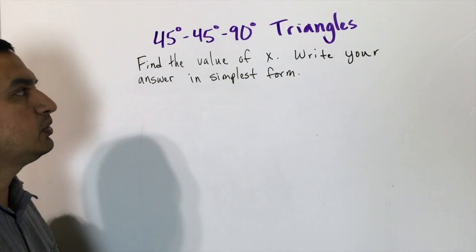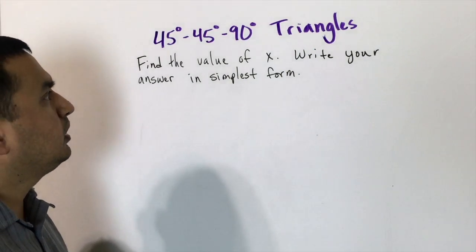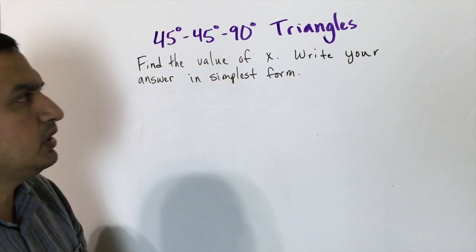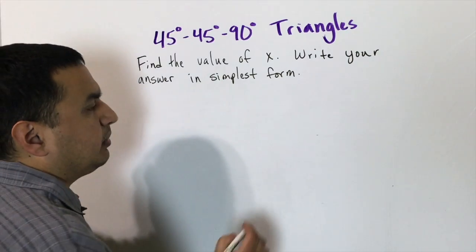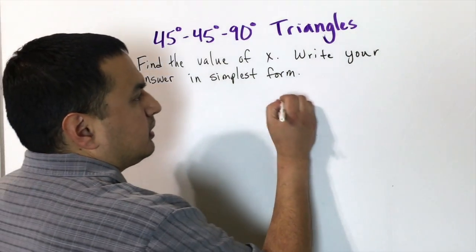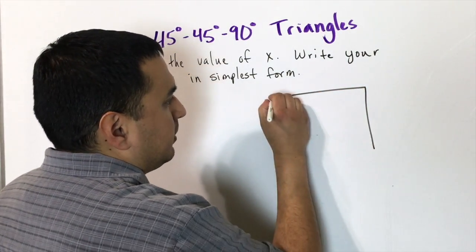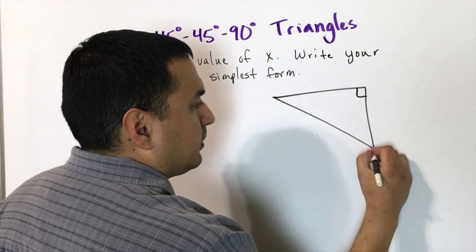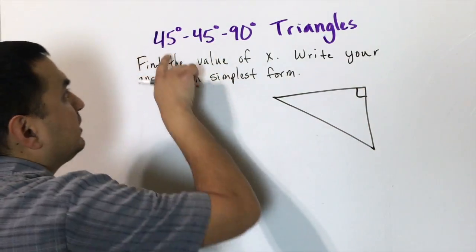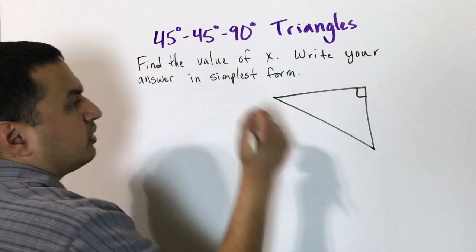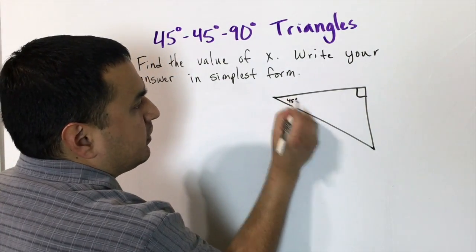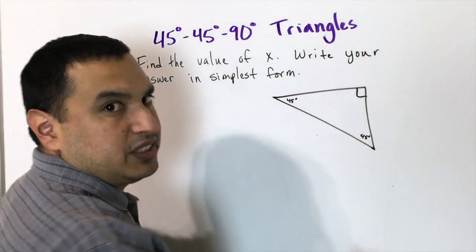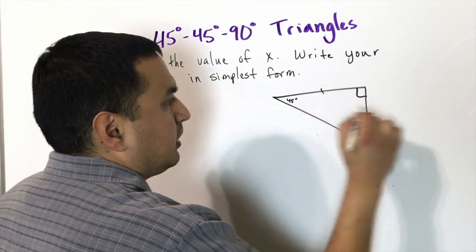This lesson deals with special right triangles. We're going to start with the 45-45-90 right triangle. One angle is 90 degrees, and because the other two angles are the same measure — both 45 degrees — it's an isosceles right triangle, which means the two legs are equal.